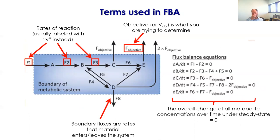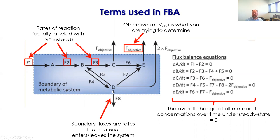There are two main approaches to solving flux balance problems: algebraic and computational. The trick to solving FBA equations algebraically is to follow these steps. First, you label all the fluxes in the diagram — V0, V1, V2, V3, V4, Vf, and Vob. Second, you assume that everything inside the boundaries can't change in concentration. Then you write out a series of equations describing the equivalencies for everything inside your network, and from that you make calculations about what's happening.